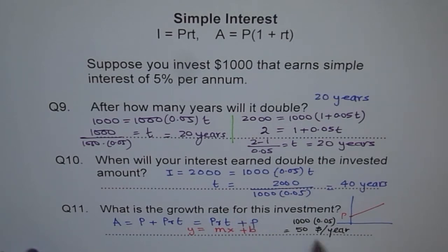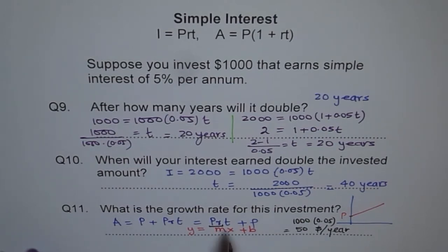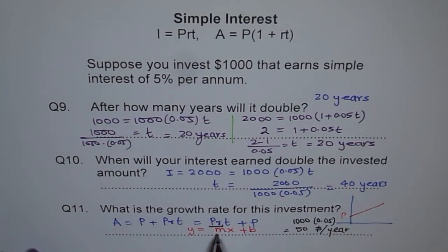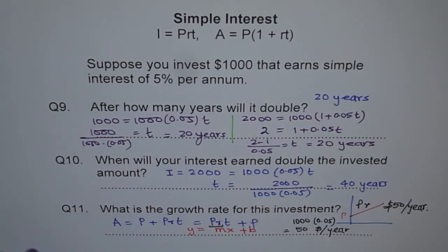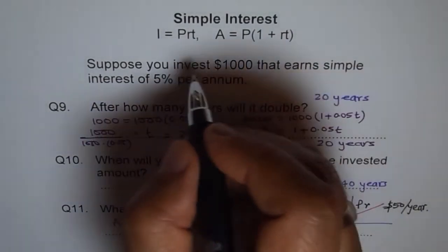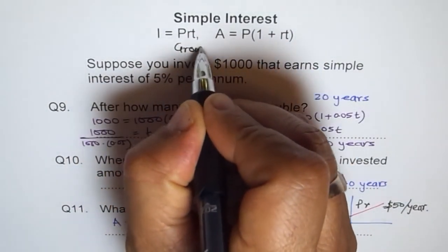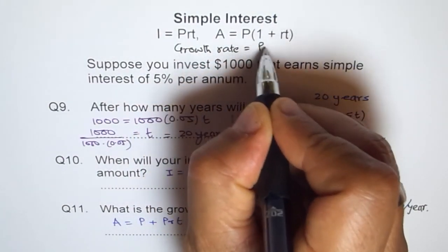What is the growth rate of this investment? The growth rate is fifty dollars per year. We get it by multiplying P with R. If you compare with the line equation Y equals MX plus B, B is the Y-intercept which is P — the principal amount — and M is the slope or the growth rate, which is P times R. So the growth rate of an investment is P times R, and in our case this equals fifty dollars per year.